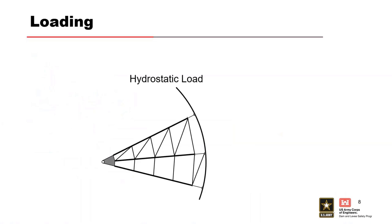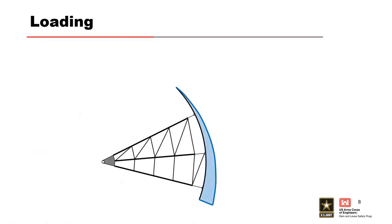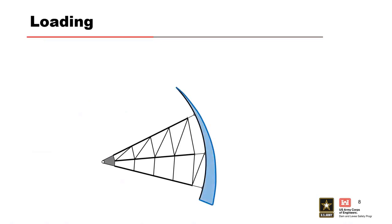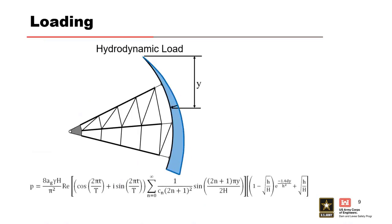The hydrostatic load on the gate is straightforward — it's just calculating the water pressure on the gate. The centroid acts at the third up from the base; it's the normal pressure distribution from water. The big loading factor on this gate for this potential failure mode is hydrodynamic loading.